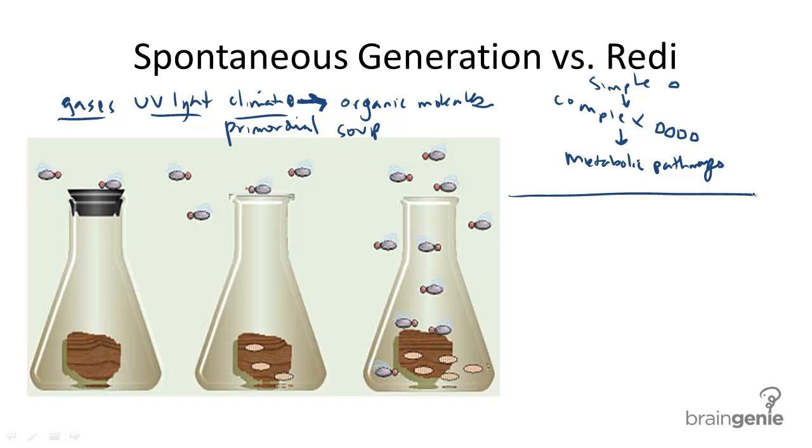All of that said, one of the oldest theories of the origins of life on planet Earth is called spontaneous generation. And it is like it sounds. The idea of spontaneous generation suggests that living things can arise from non-living things.